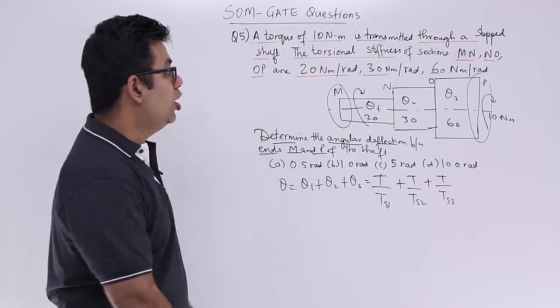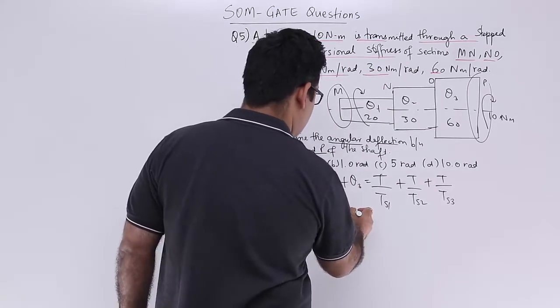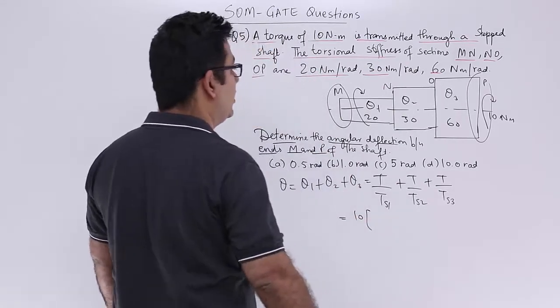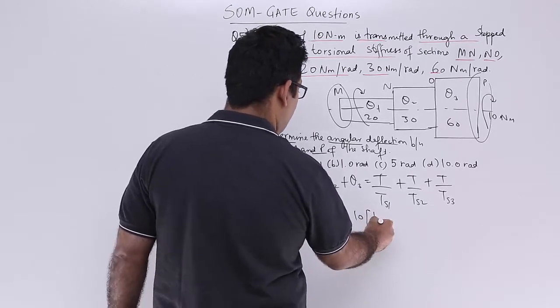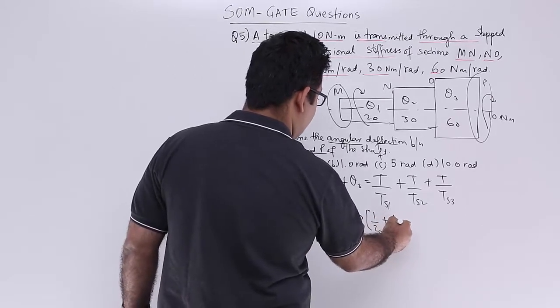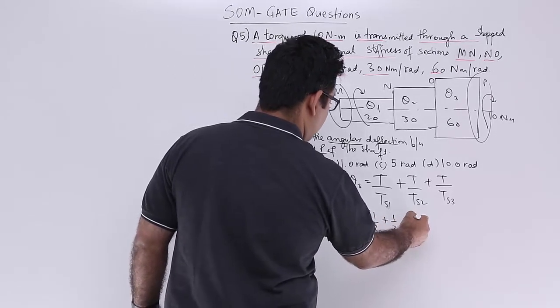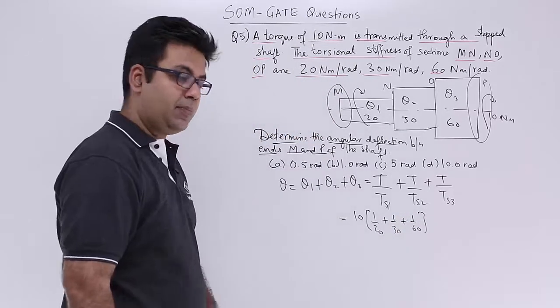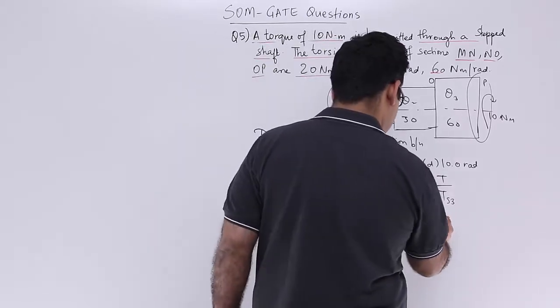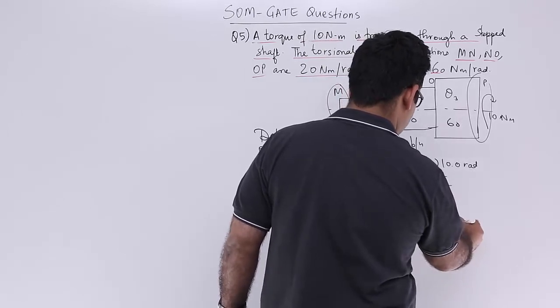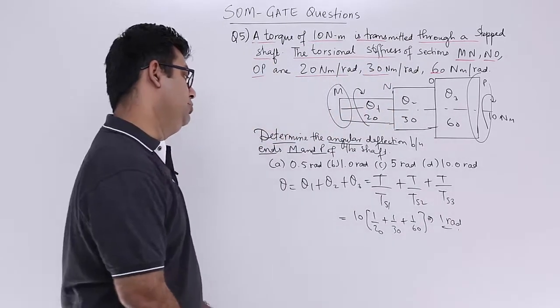...plus torque upon the torsional stiffness for the second section plus torque upon the torsional stiffness for the third section. So torque is 10 throughout. This would be 1 by 20 plus 1 by 30 plus 1 by 60.